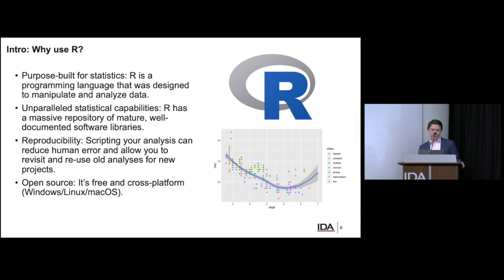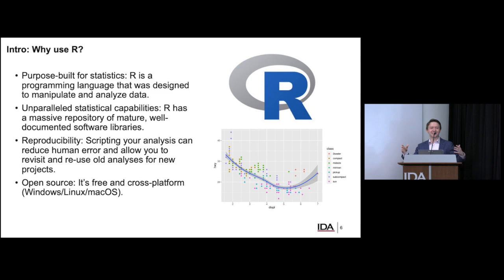R is open source, so you're not paying anything on an ongoing basis — no per-seat fee, no monetary costs. It's cross-platform, supported on Mac, Linux, and Windows. Probably the only downside is you have to get it through IT. That's by far the biggest challenge — getting your IT department to approve installing a programming language. But plenty of organizations have done it, and there are ways to do it safely.